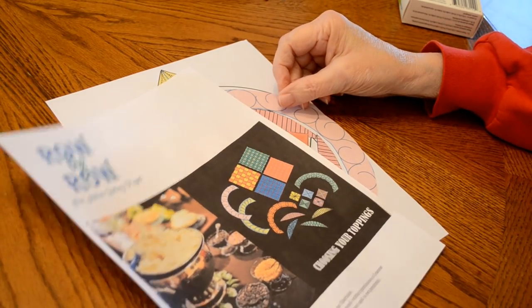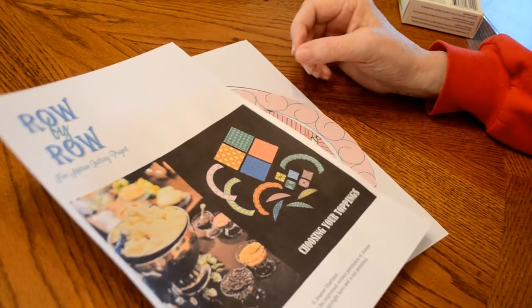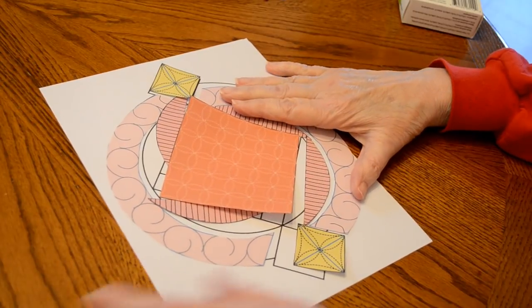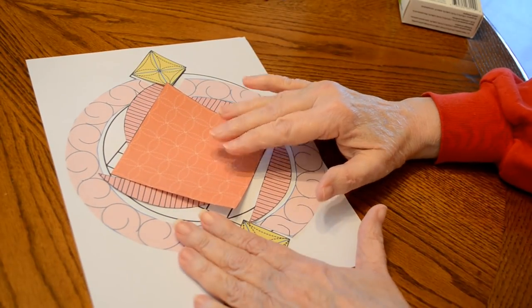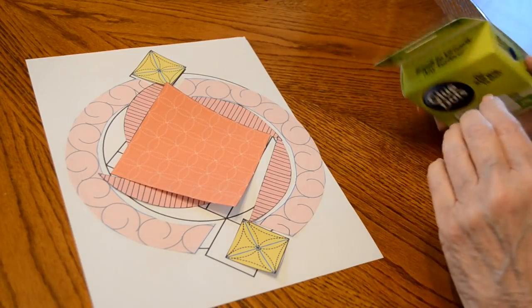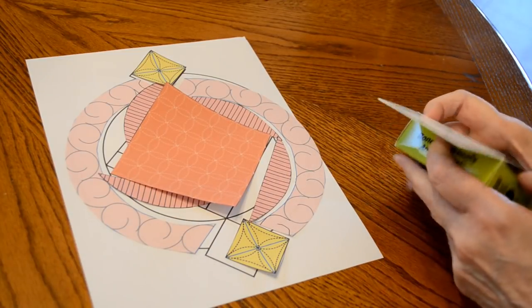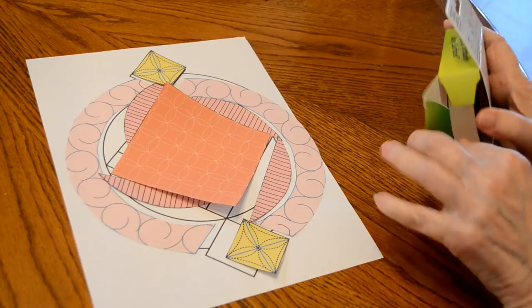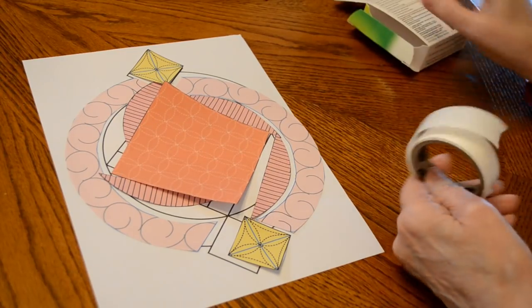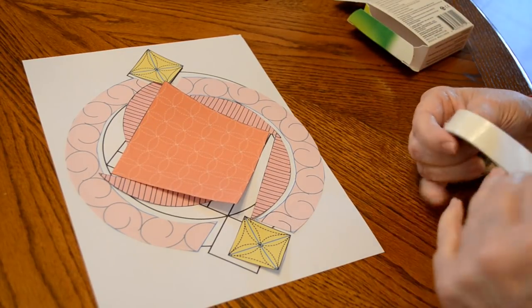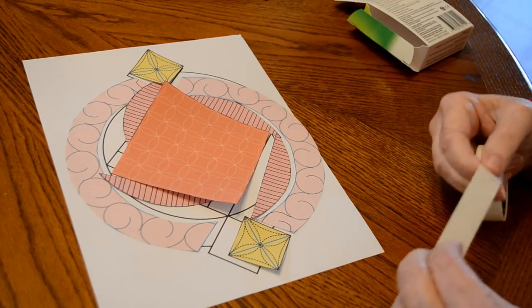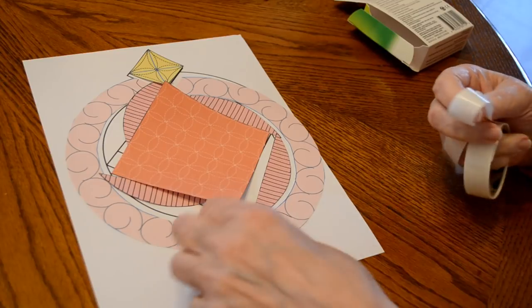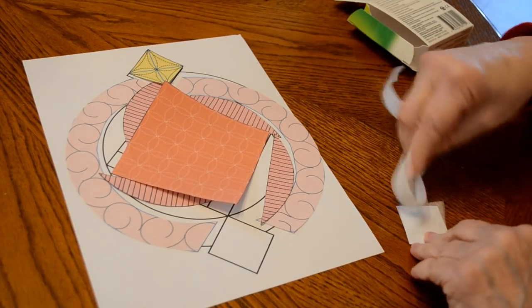I've printed out my booklet for choosing the toppings, and I chose toppings that I thought I might like, and I've cut them out. And I'm going to use these repositionable dots and place it down on those. See if I like this layout, or if I want to change it to something else.